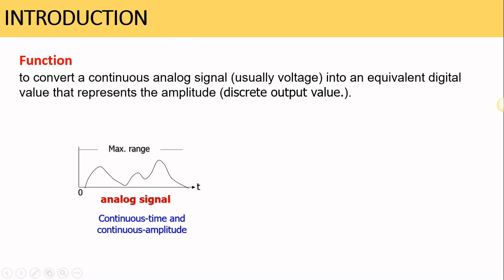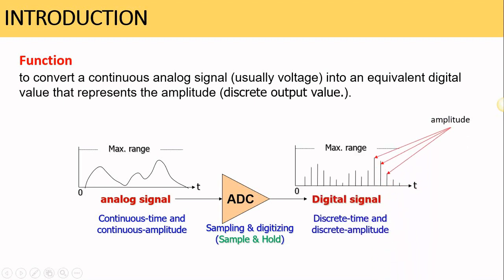An analog signal exists in continuous time and continuous amplitude. By using the ADC — which consists of a sampling and digitizing operation, or what is called the sample and hold circuit — the microcontroller converts the analog signal into a digital signal. This digital signal is discrete in time and discrete in amplitude.